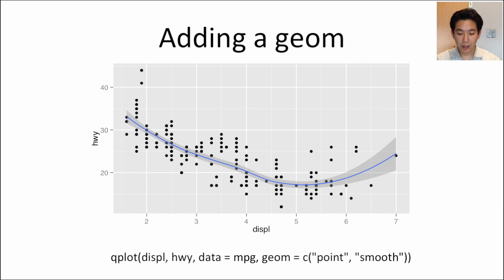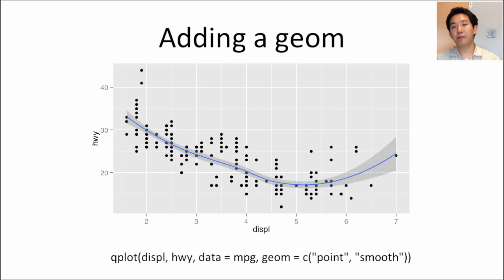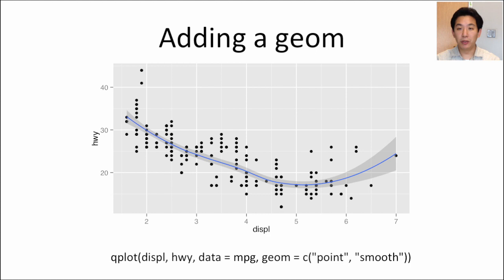Another thing you can add is a statistic — some summary of the data. The summary chosen here is a smoother, technically called Loess, which smooths the data so you can see the overall trend. I do this by adding the geom argument and specifying two geoms: one to add the points themselves so you can see the data, and then a smooth geom. The smooth appears as a blue line with a gray zone indicating the 95% confidence intervals.